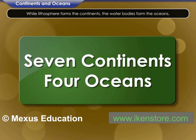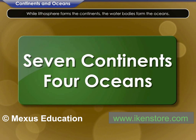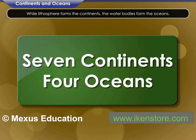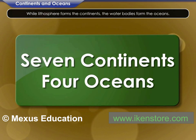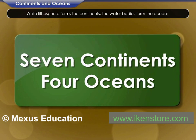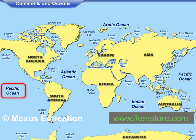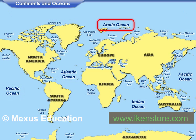There are seven continents and four oceans on earth. Pacific Ocean, Atlantic Ocean, Arctic Ocean and Indian Ocean are the main oceans. The Southern Ocean is the world's newest ocean.